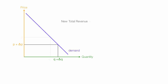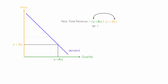My new total revenue is equal to my new quantity times my new price. Using a bit of algebra, that expands to QP plus quantity times the change in price, plus change in quantity times price, plus the change in quantity times the change in price.